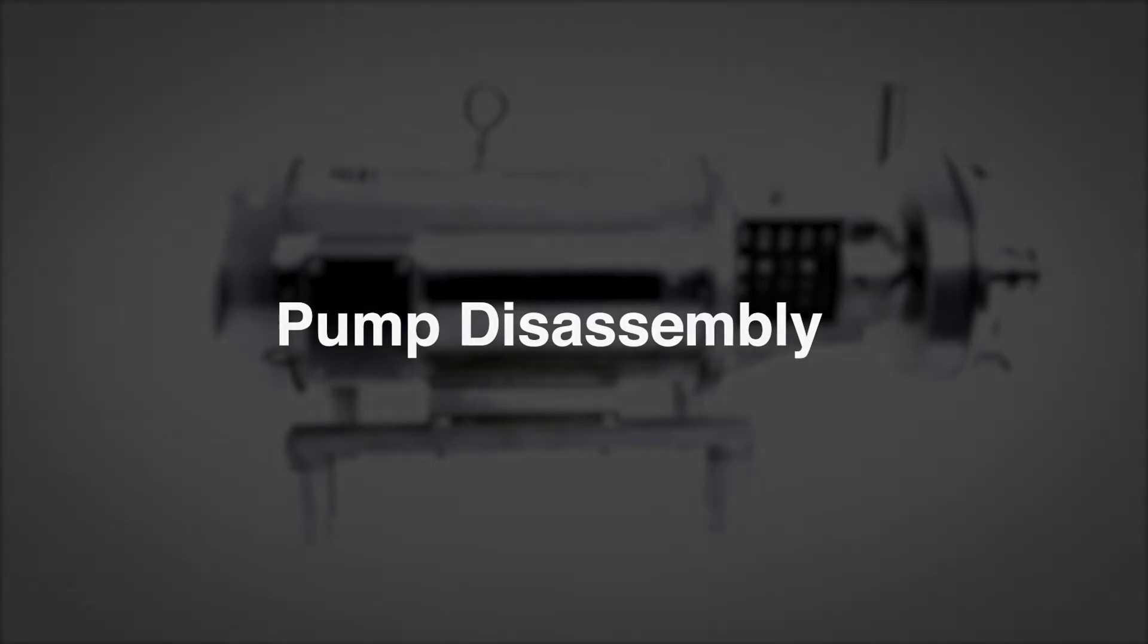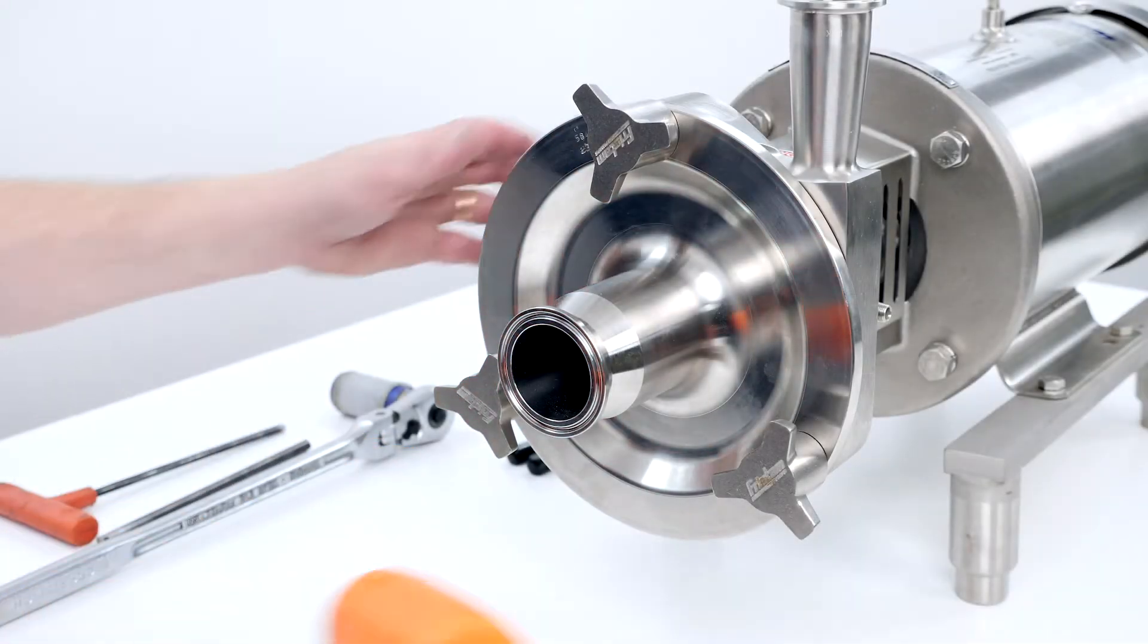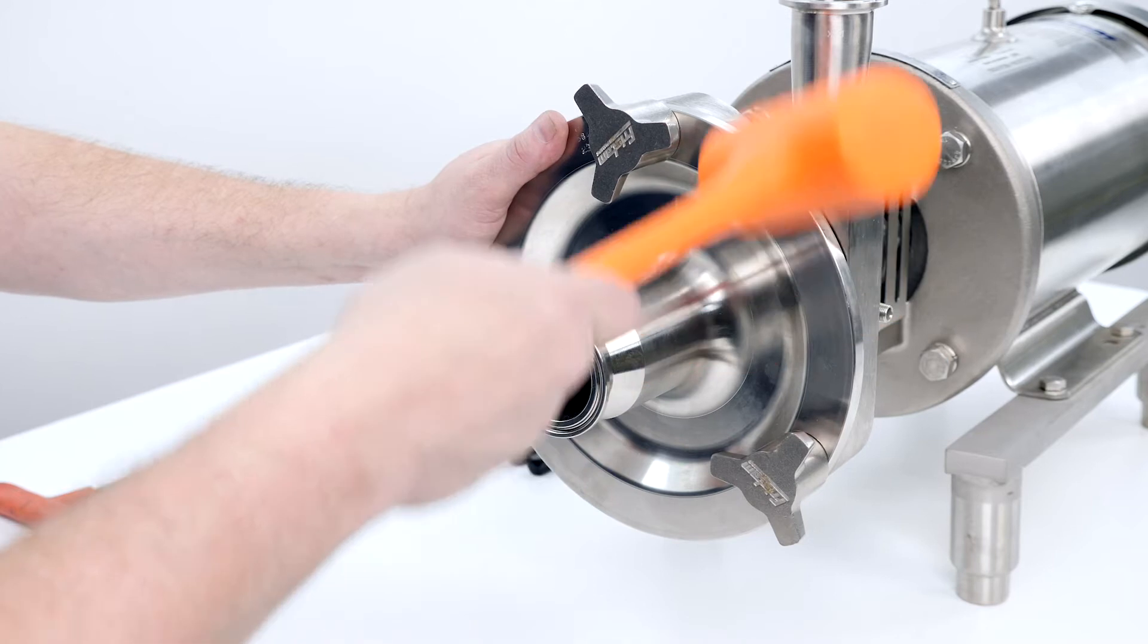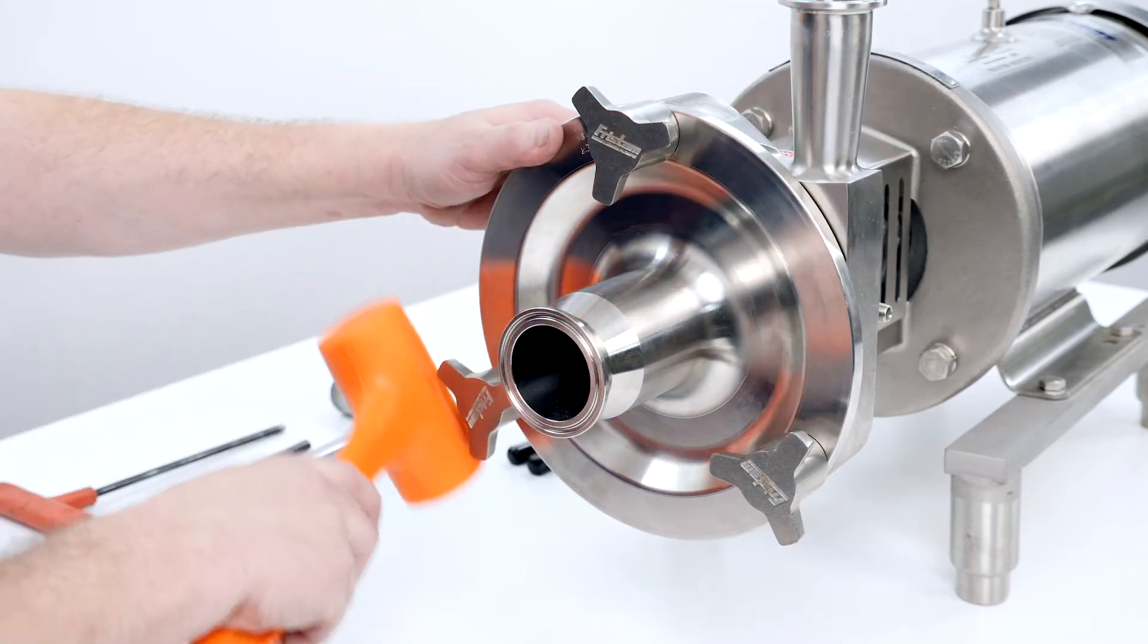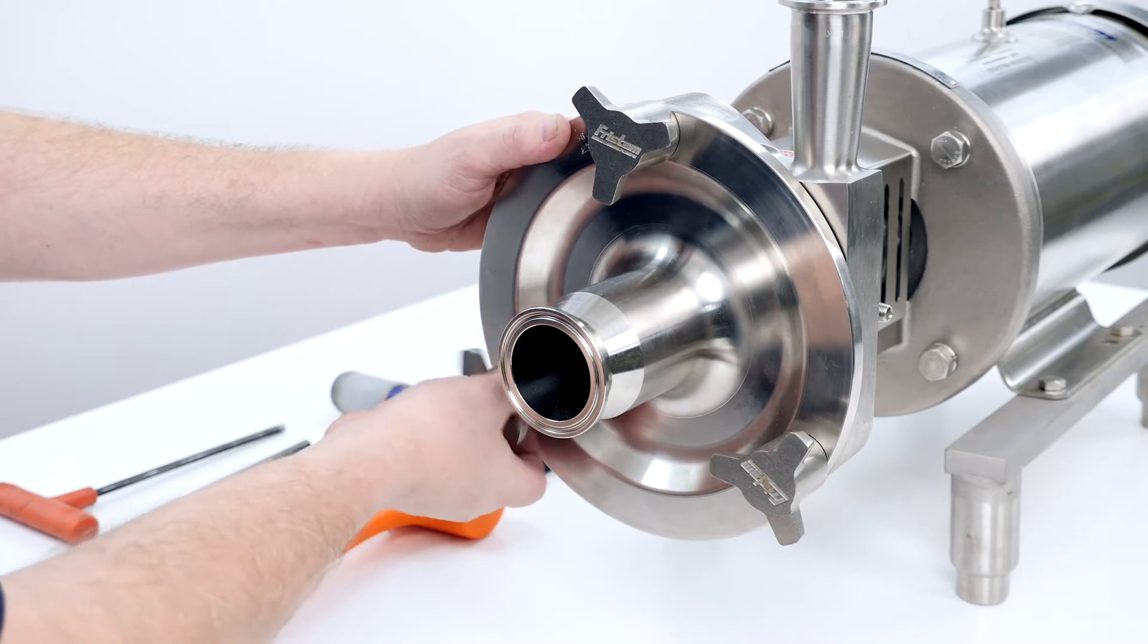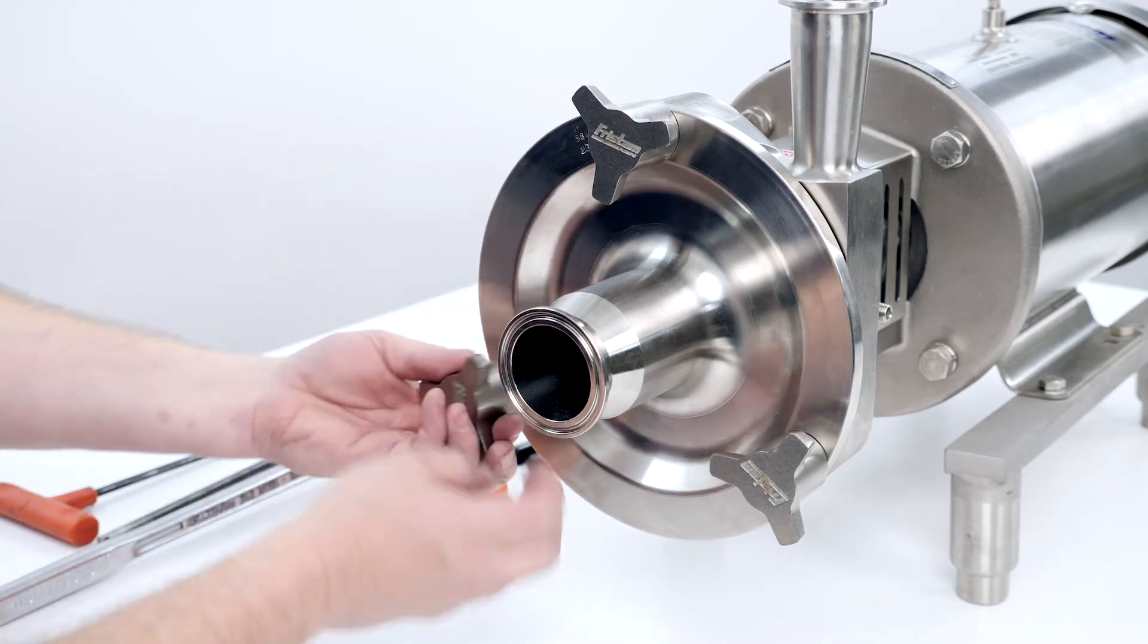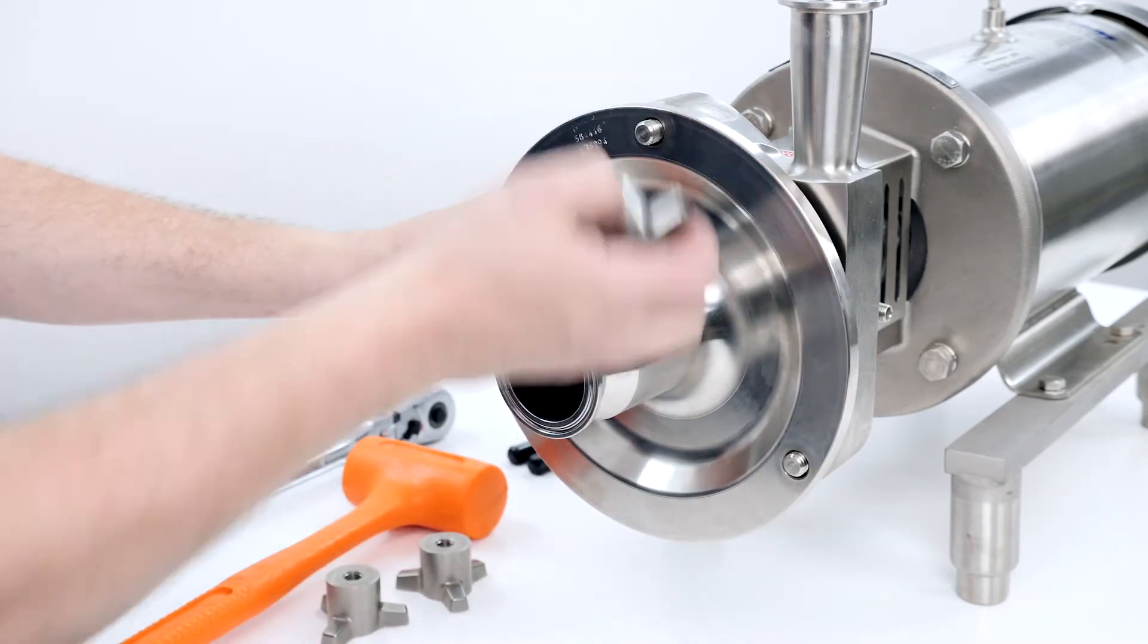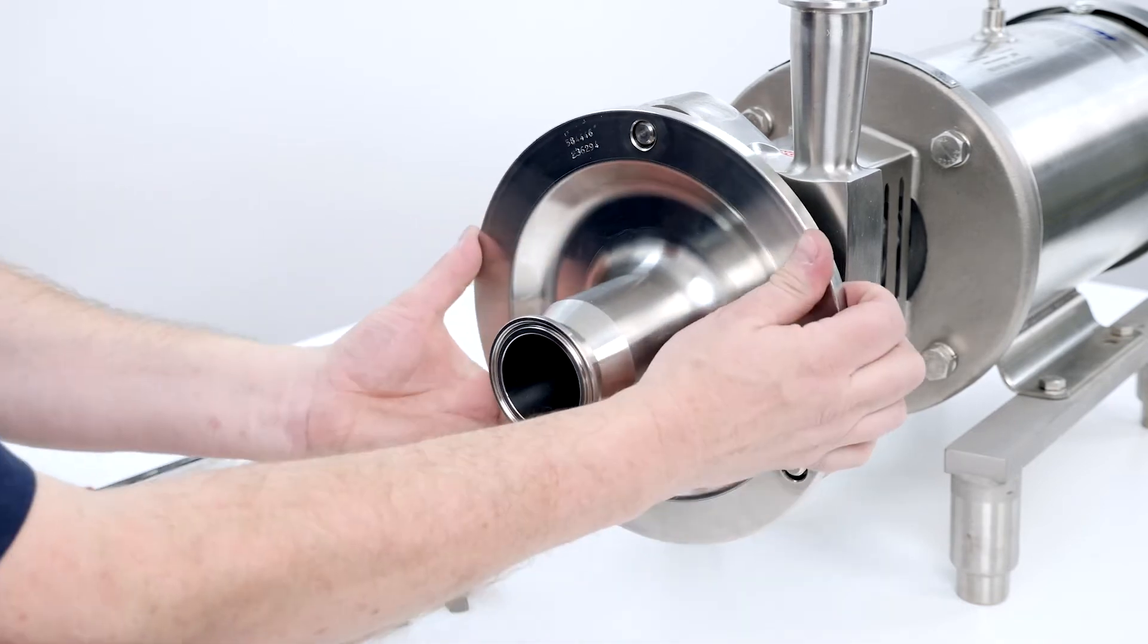Disassembly. Loosen the cover star nuts with a soft faced hammer and remove them. Remove the cover and discard the cover O-ring.